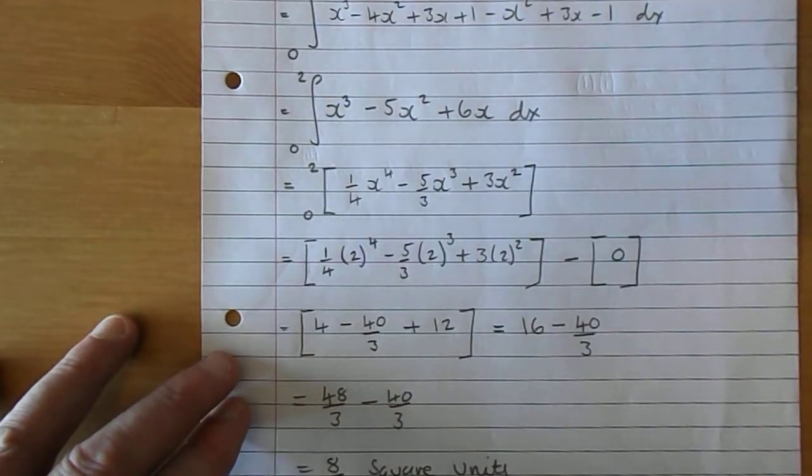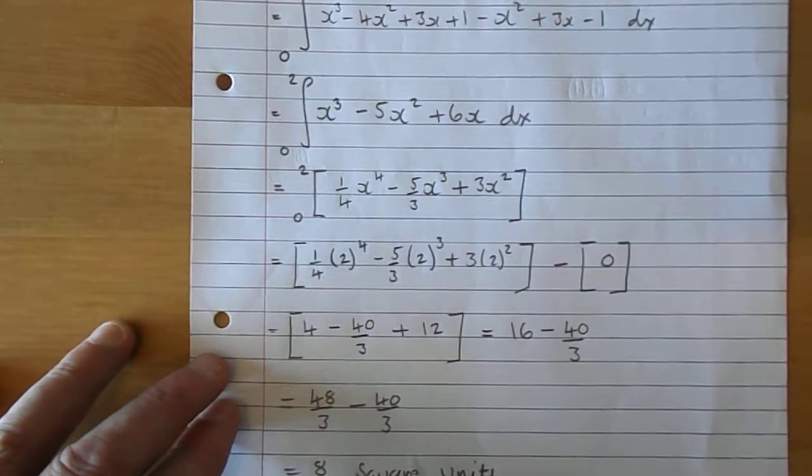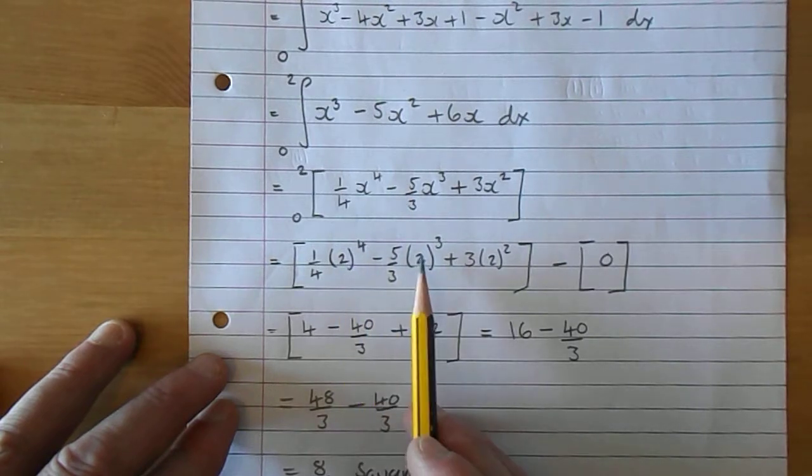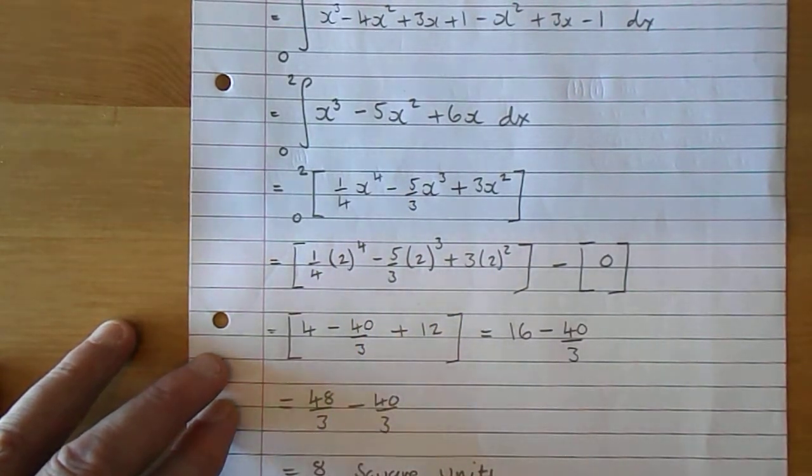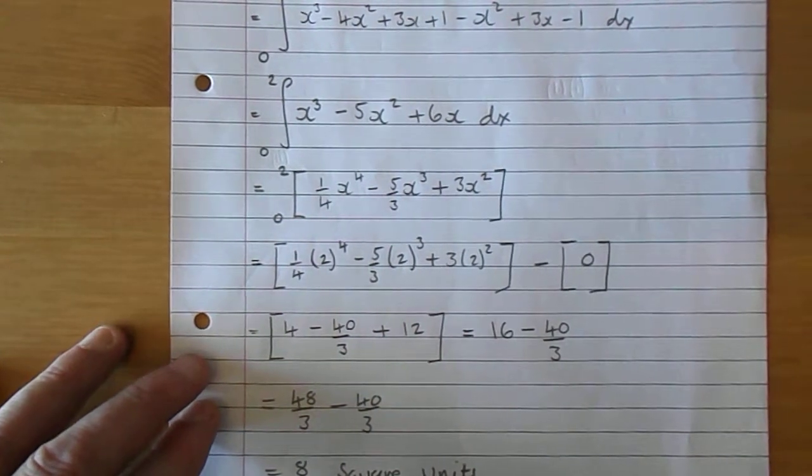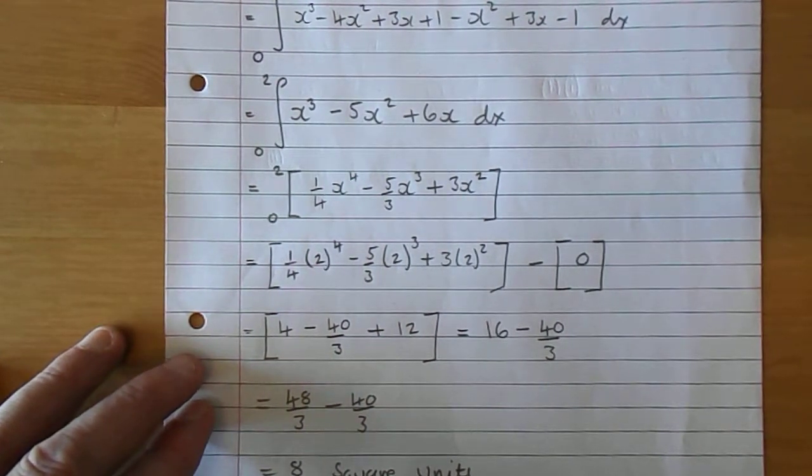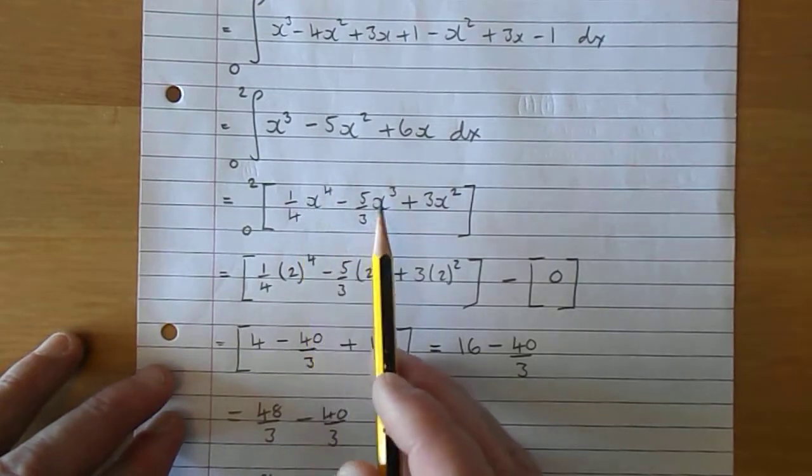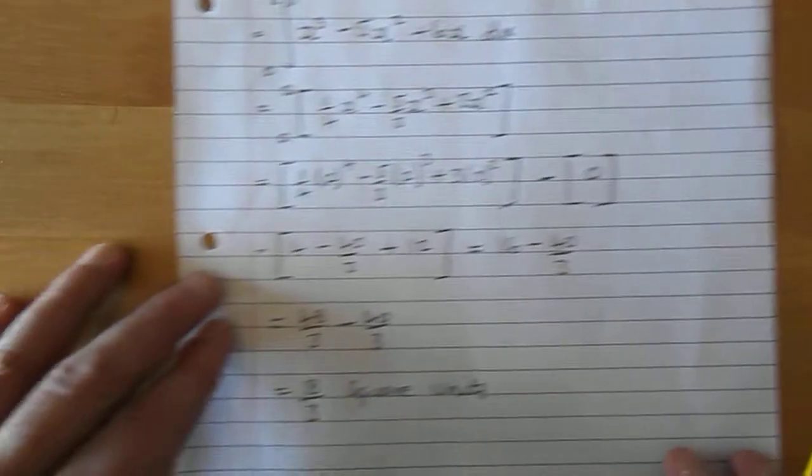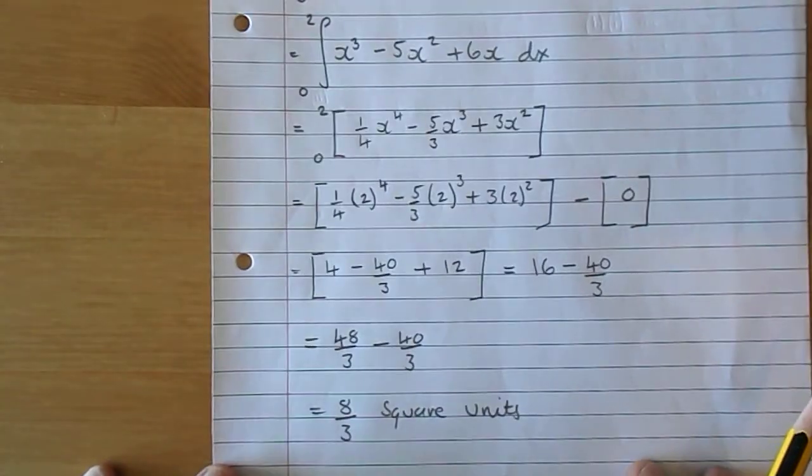We're now going to put 2 and 0 through these and do a subtraction. We replace x with 2, and you can see there: a quarter times 2 to the power of 4, take 5 over 3 times 2 cubed, plus 3 times 2 squared. Incidentally, putting 0 through is always quite easy because you always get 0, so we can just ignore that.